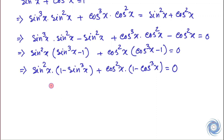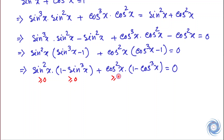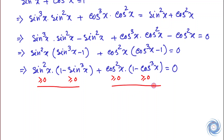Now note that sin²x is a positive quantity, so this is positive. Also, sin³x is always less than or equal to 1, so 1 minus sin³x is greater than or equal to 0. Similarly, cos²x is greater than or equal to 0, and 1 minus cos³x is also greater than or equal to 0. Therefore, these two quantities are both positive, and the sum of two positive quantities equals zero.